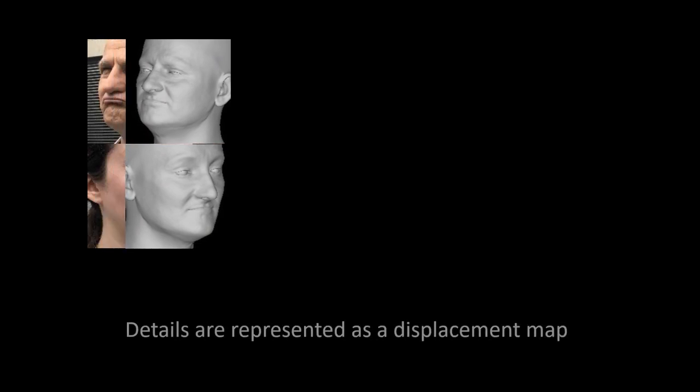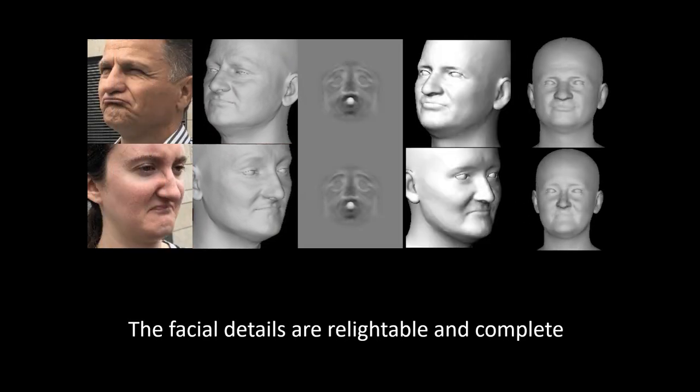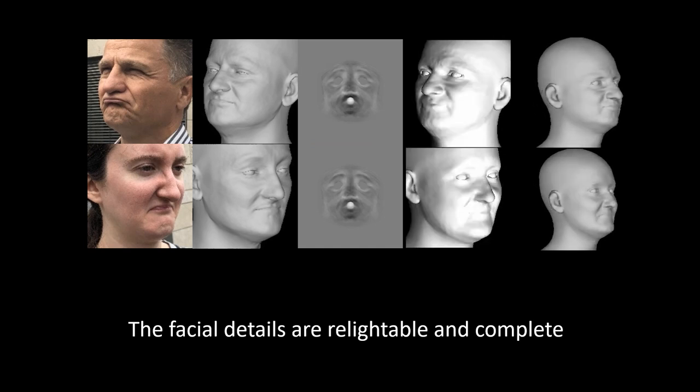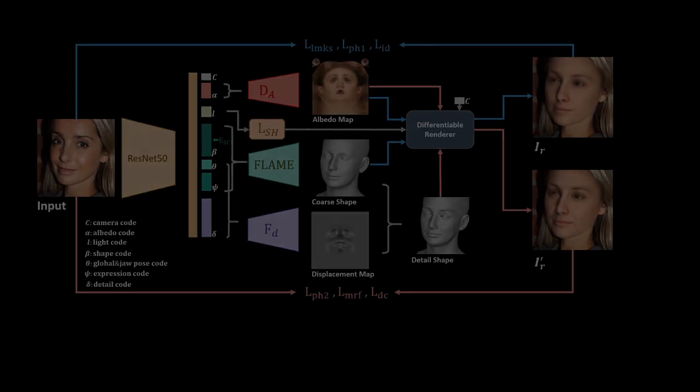We express such fine details as a displacement map generated from a learned low-dimensional latent space. Using a novel detail consistency loss during training, we learn the detail space without explicit supervision in an end-to-end training framework.